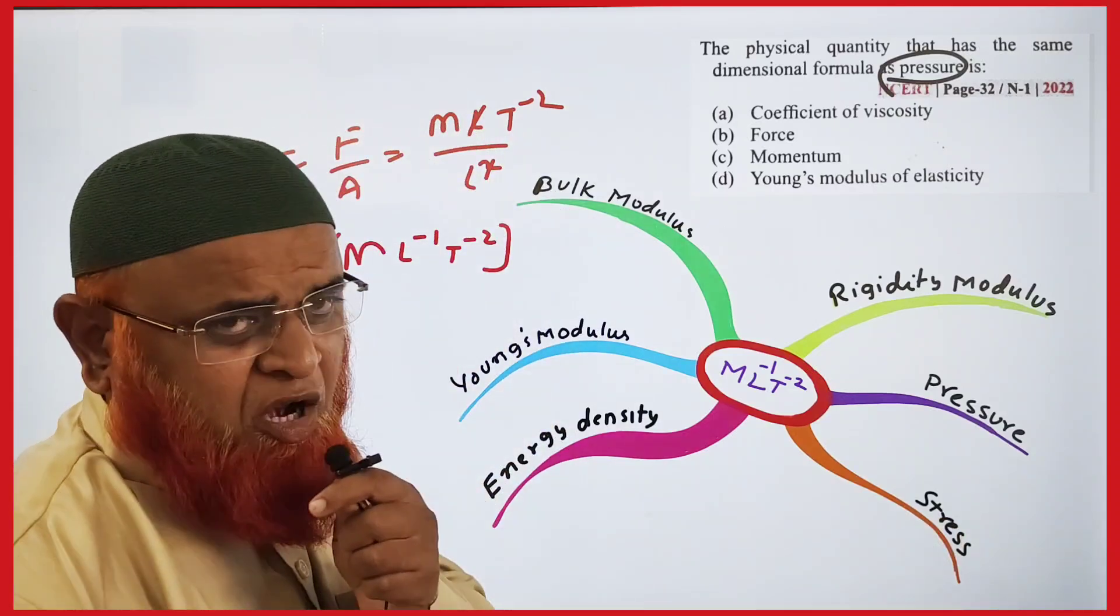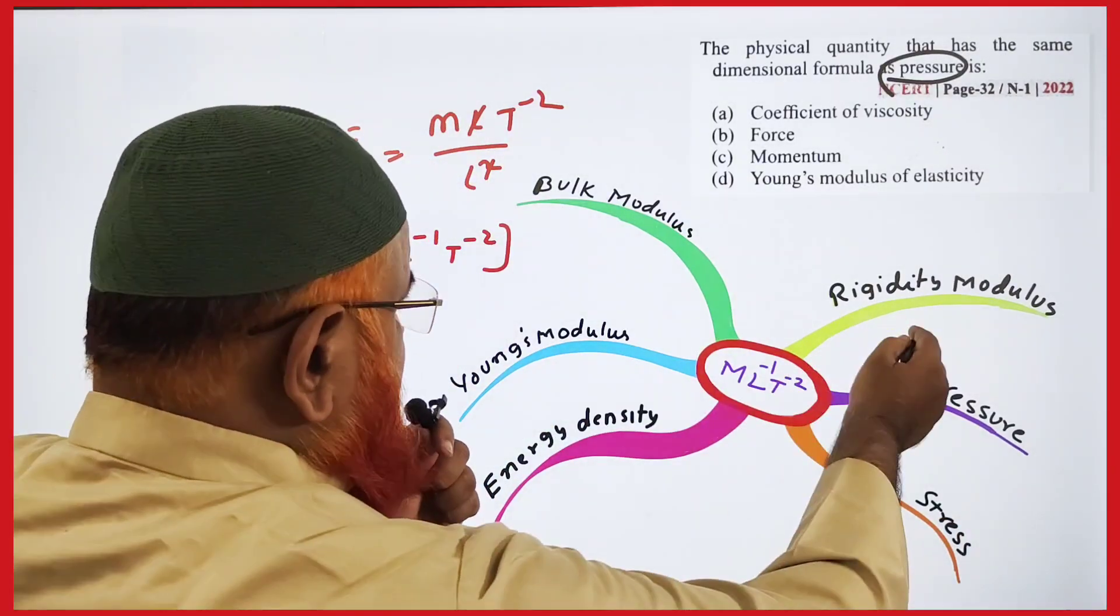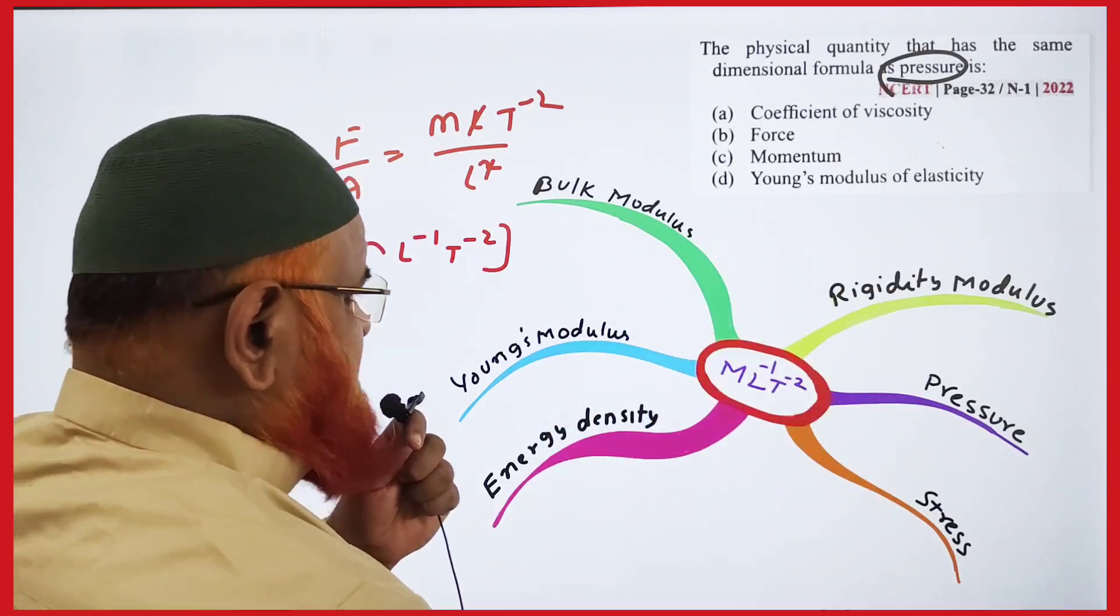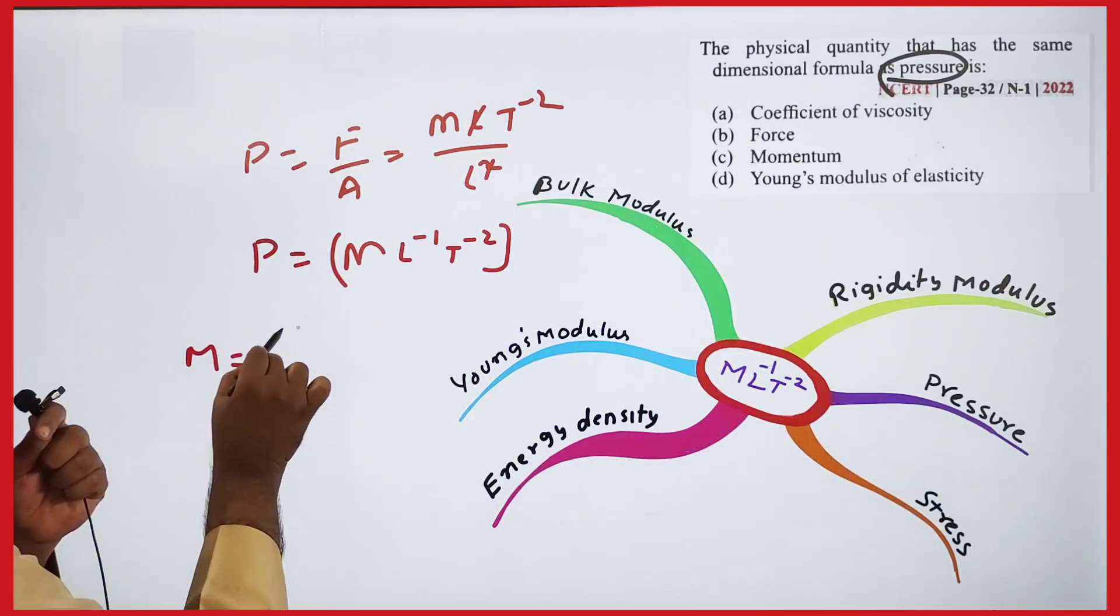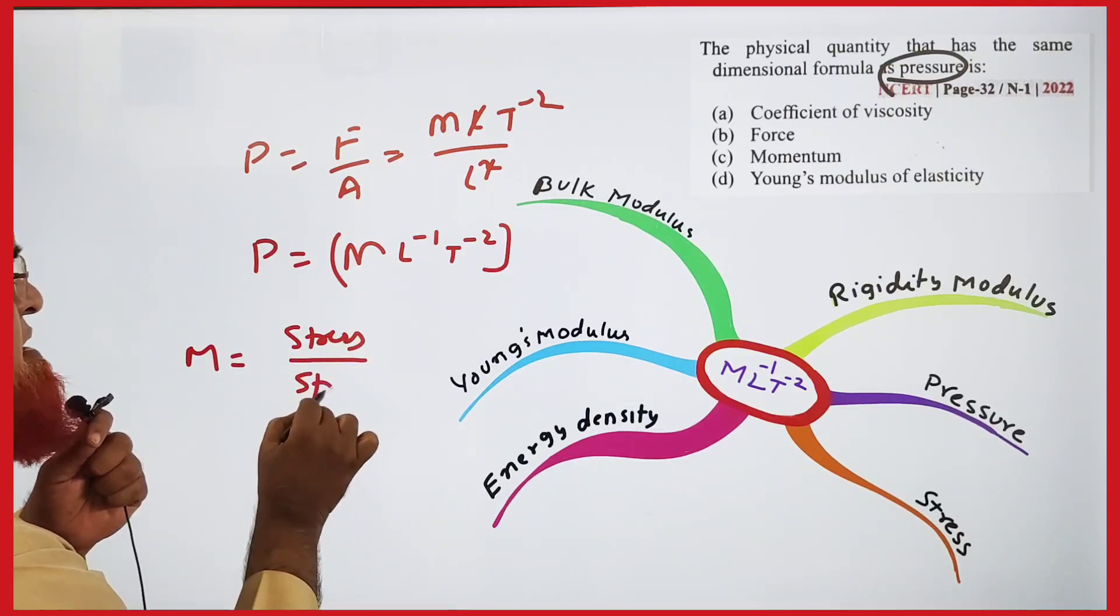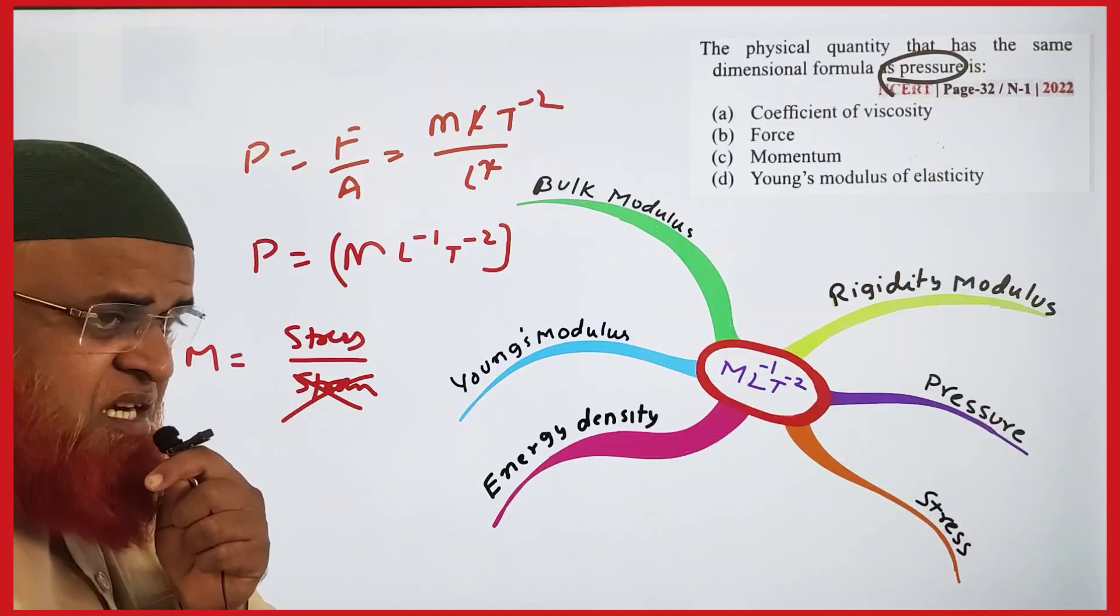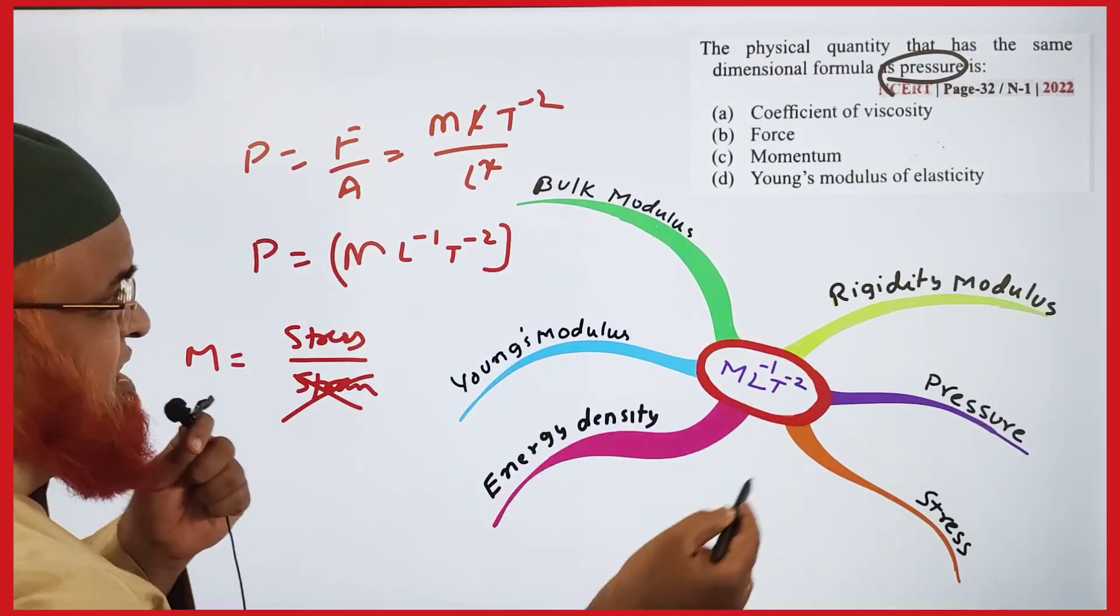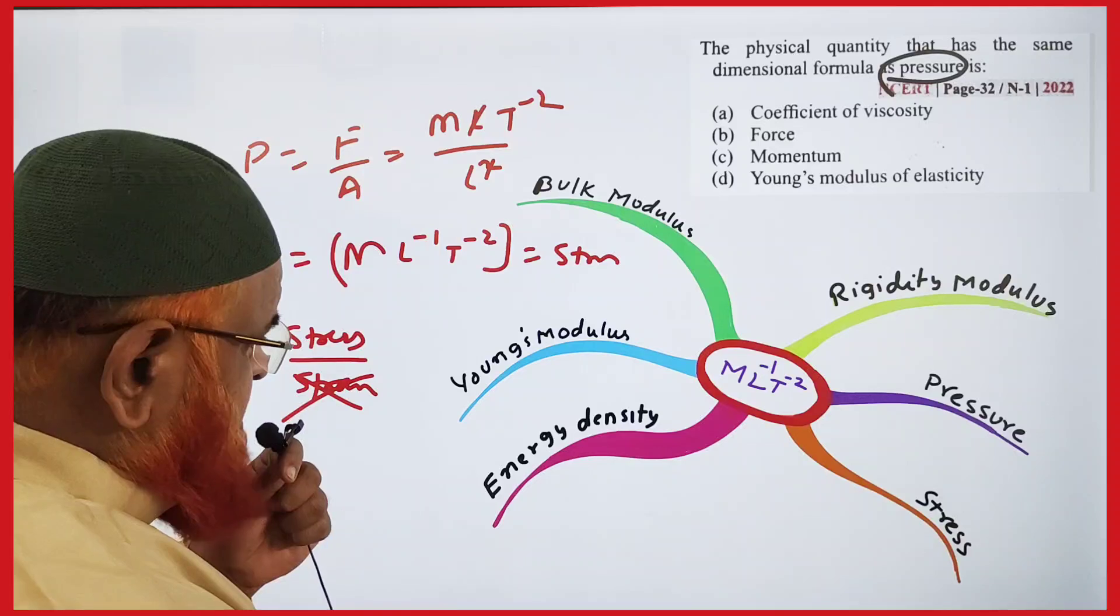Pressure and stress have the same formula. Pressure is force by area, stress is also force by area. Regarding the modulus of elasticity, modulus of elasticity is stress divided by strain. Strain does not have any dimensional formula because it is a ratio. Stress and pressure have the same formula as I just told you.